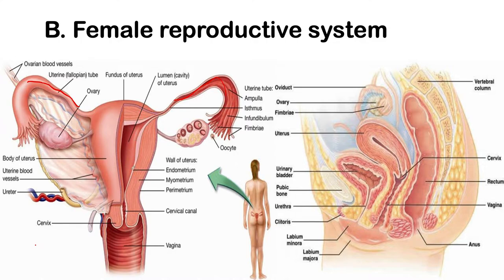Note that your endometrium is very close to your ovarian blood vessels. In the uterine wall, or in the endometrium, blood vessels also build up in order to support your developing embryo.